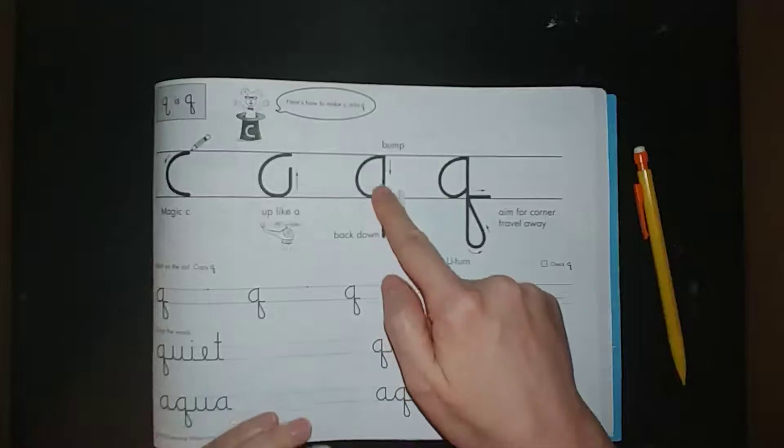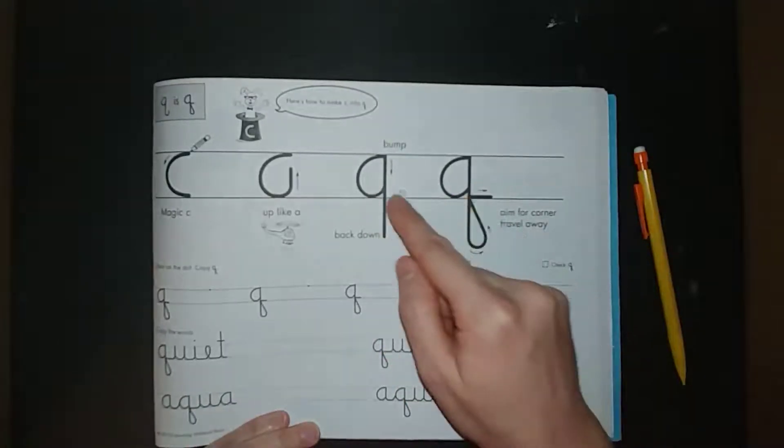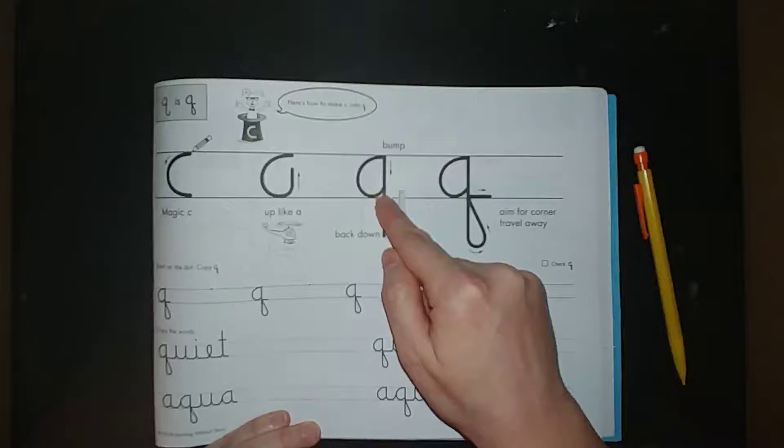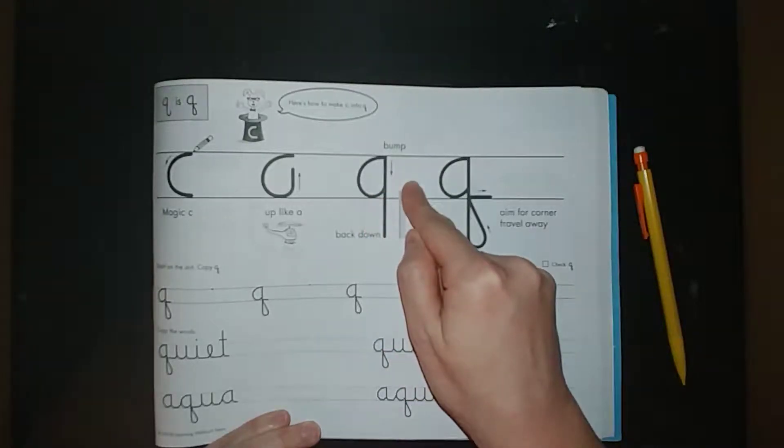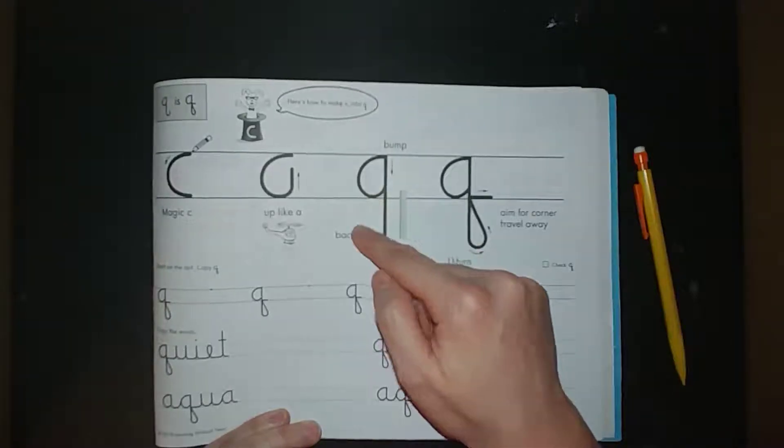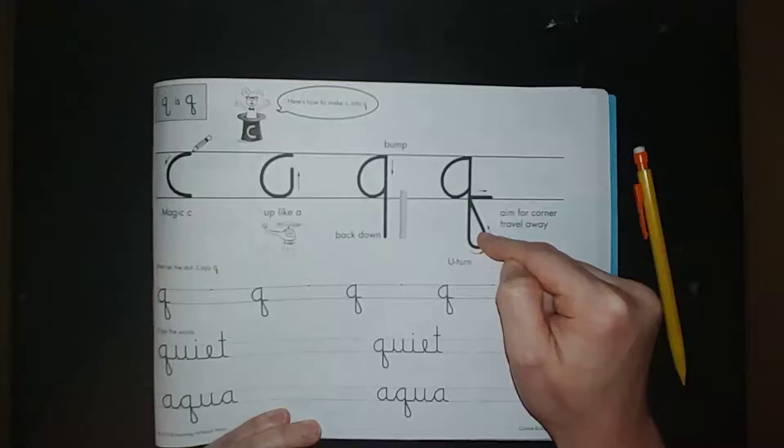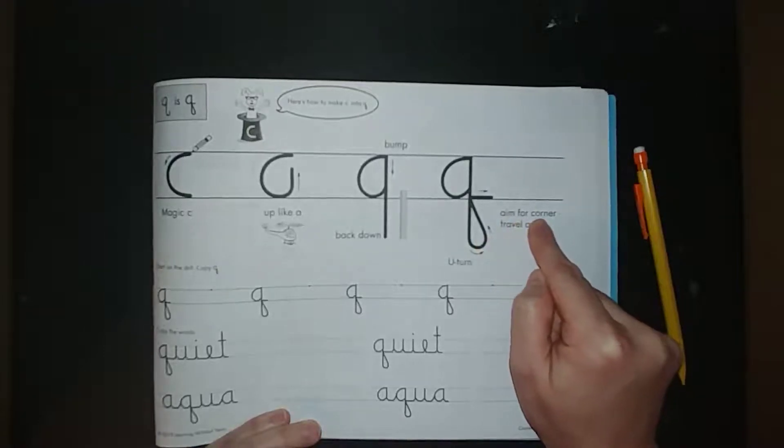Then, here's where I see second graders get confused sometimes. Sometimes second graders want to go this way and do a loop, but that makes the cursive G.